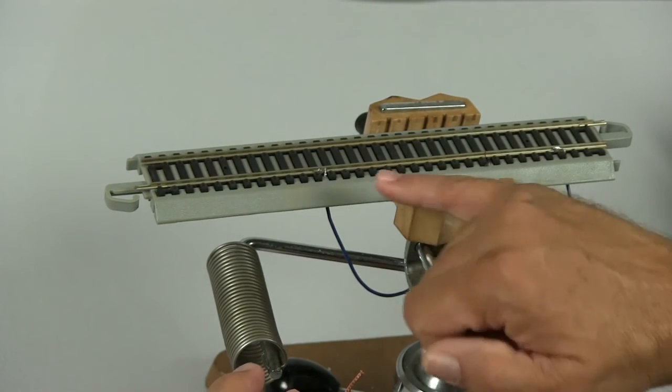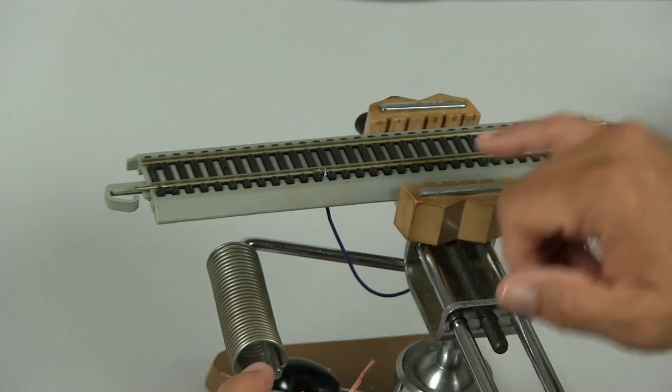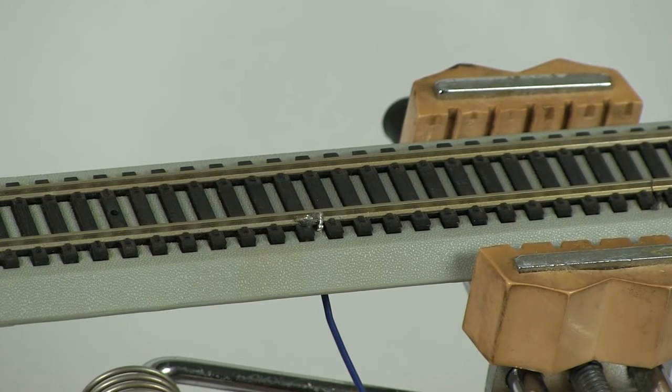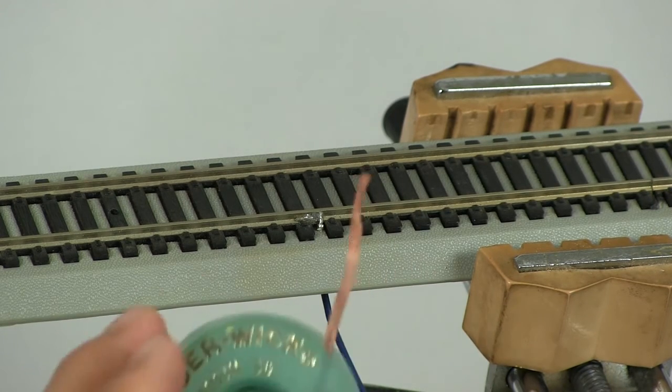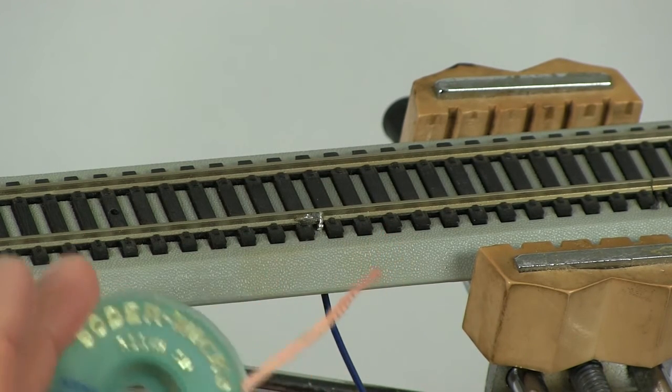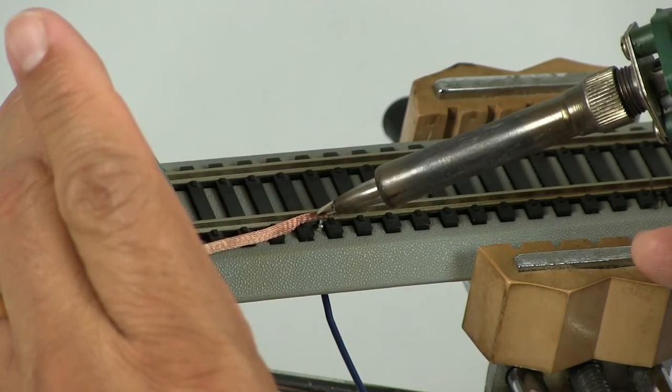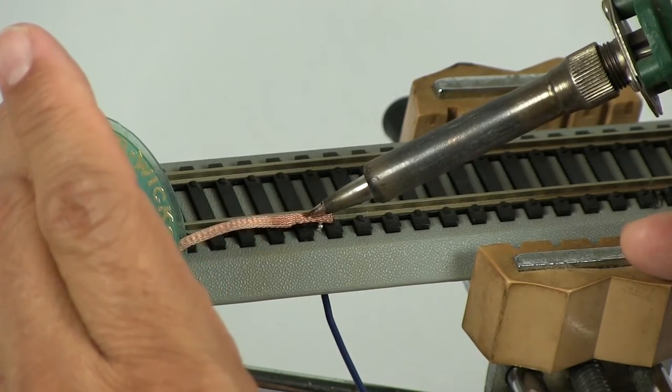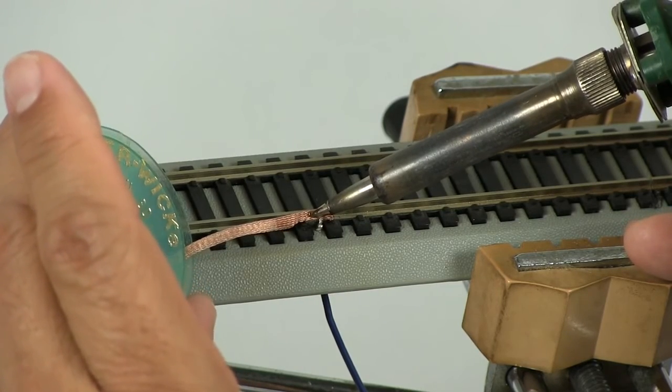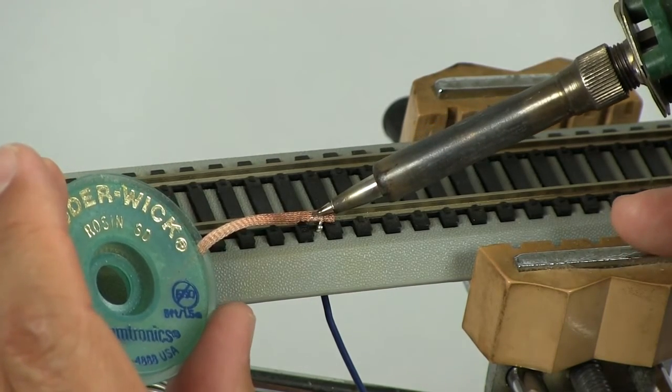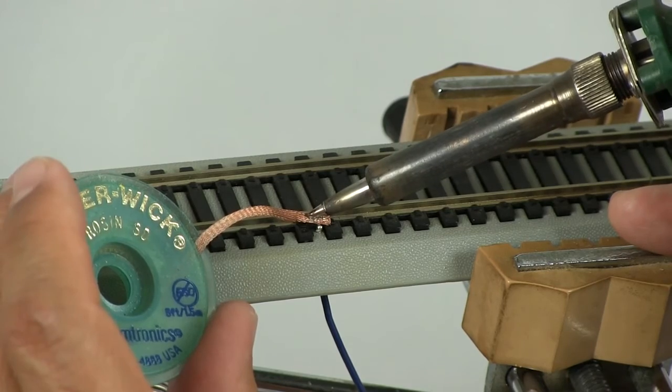Here we have a solder connection, a feeder to a rail. We're going to remove this wire from the rail. Okay, our solder iron is on. We're going to wipe the tip to get all the excess solder off the tip so it's nice and smooth and shiny. We have the flux applied to our solder wick. We're going to lay the wick right across where the solder is and press that wick into the solder. And as soon as that solder heats up and melts, the wick will draw the solder away.